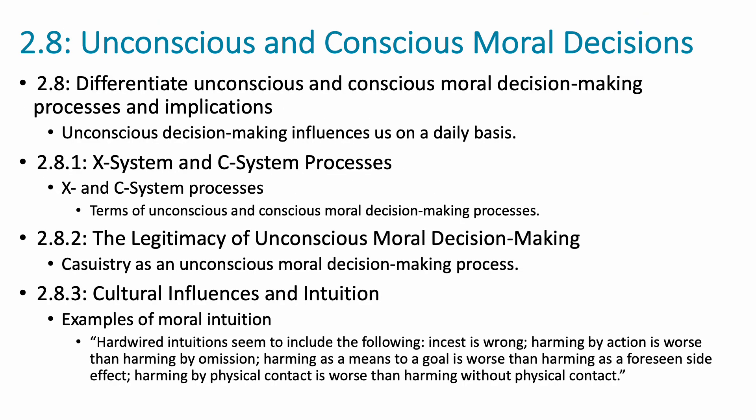Our last section deals with conscious and unconscious moral decisions. The X system is our unconscious moral decision making process — our brain has ingrained, hardwired ways of doing things, and we know fundamentally what is right or wrong in a given situation. The C system is the conscious. Our goal is to bring our X system to consciousness, and that's what casuistry is — taking that unconscious moral decision making process and making it more conscious so we are aware of what that process actually looks like.